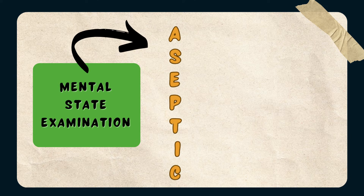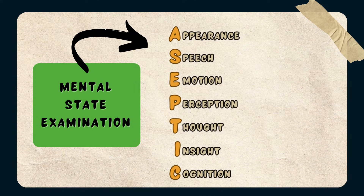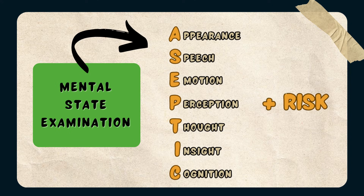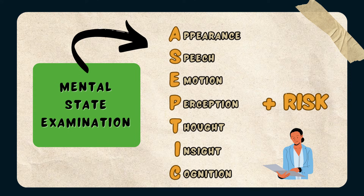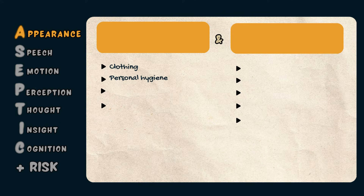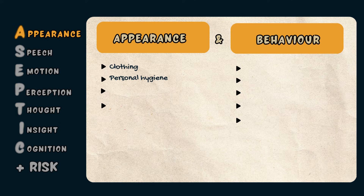In this video we're going to cover the ASEPTIC framework, which is a handy acronym to remember the Mental State Examination. We'll also include how to assess suicide risk after the MSE. Stay tuned until the end of the video to see an example of the Mental State Examination in action. The A in ASEPTIC stands for Appearance and Behavior.